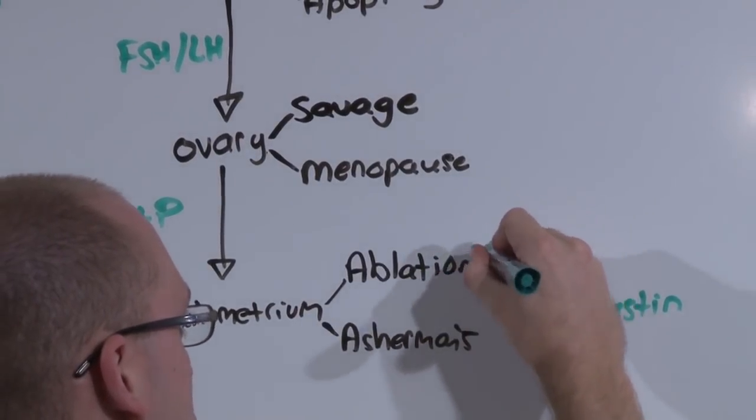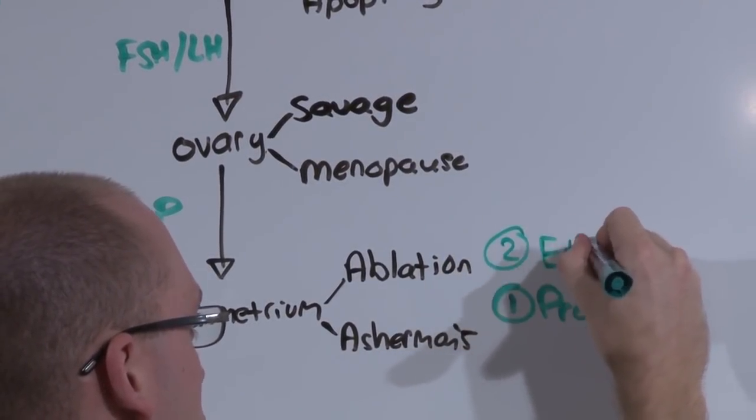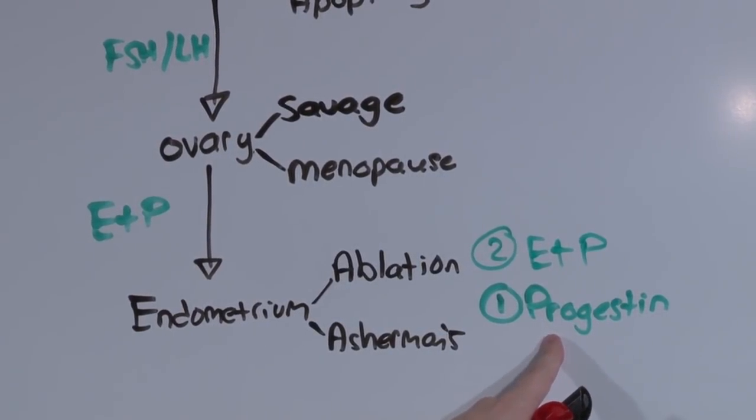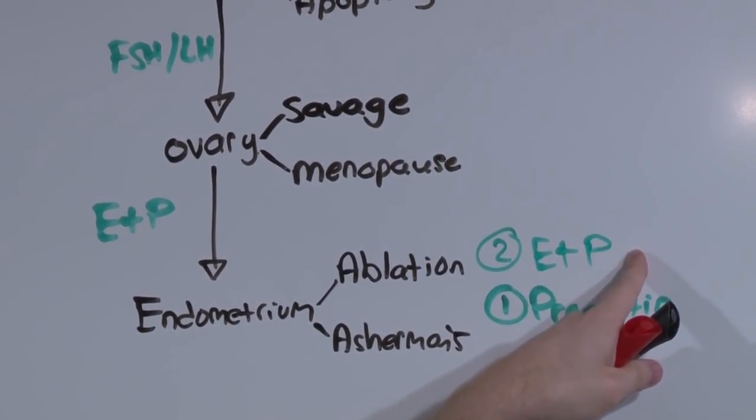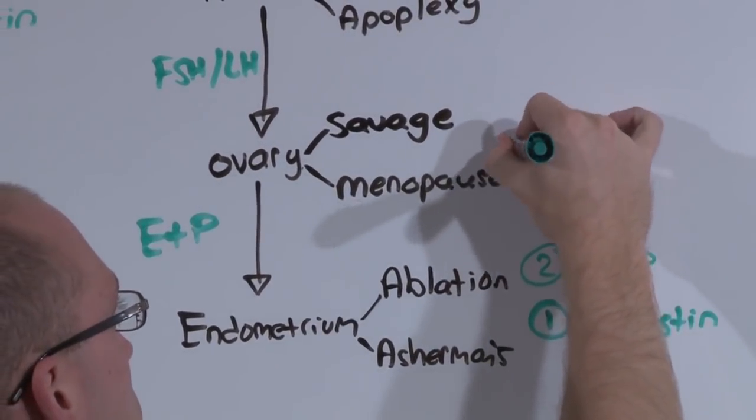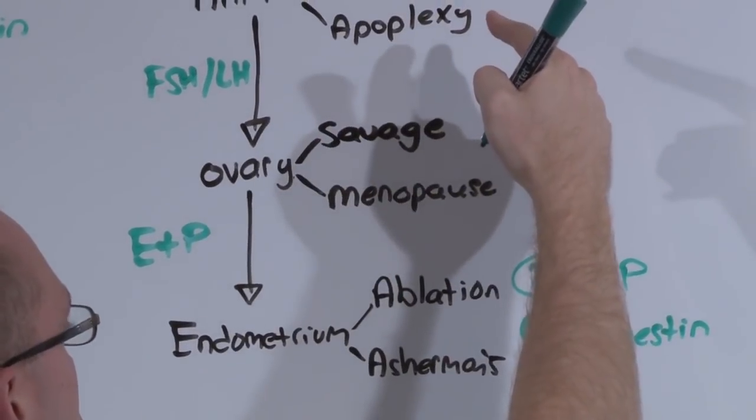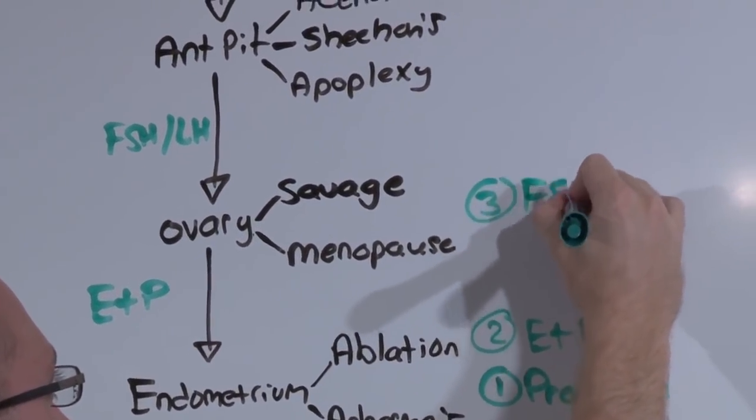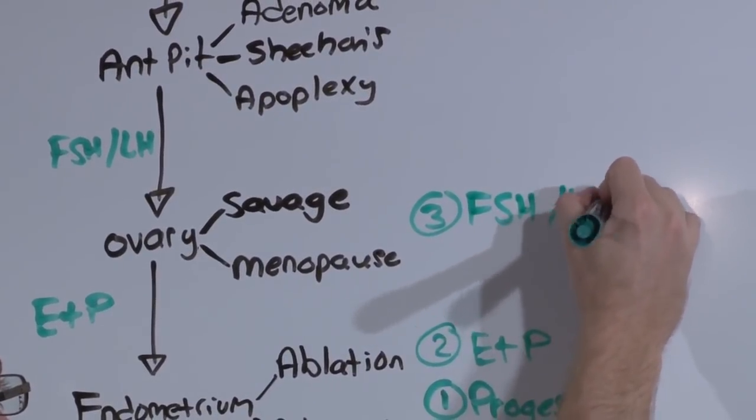The second test is an estrogen and progesterone challenge. Okay, it wasn't ready to bleed, but now can it? In order to assess the ovaries, you want to know, is there a signal coming from the anterior pituitary, or is the ovary simply deficient in its ability to respond? Again, an FSH and LH level. It will be elevated if the ovaries are broken.